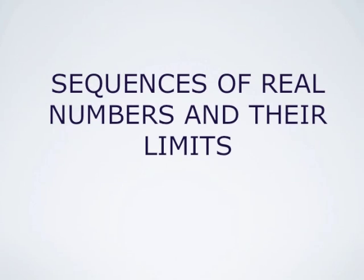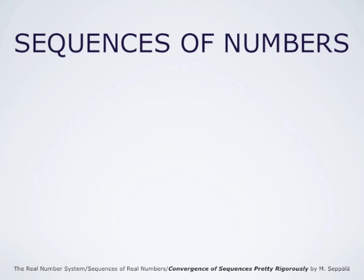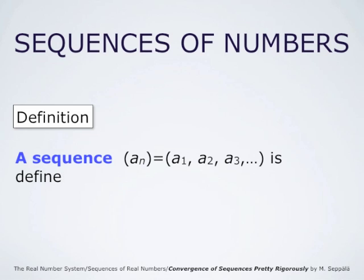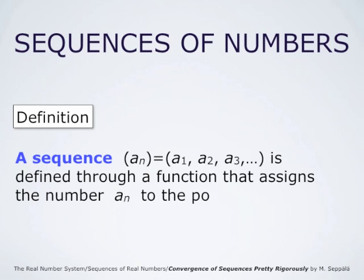Sequences of real numbers and their limits. A sequence of numbers is an ordered list of numbers. A sequence a_n is a_1, a_2, a_3, and so forth. This is defined through a function that assigns the number a_n to the positive integer n.